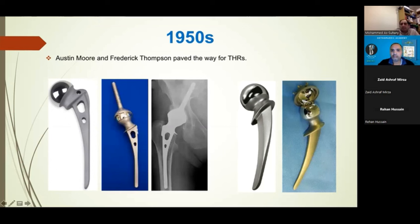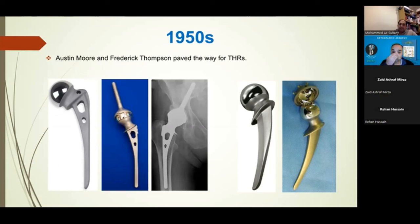Additions were made to these to create total hip replacement versions. The Thompson's cup had a spiky anchor bit that anchored into the acetabular bone, and the Austin Moore had a reverted ice-cream cone shape that screwed into the pelvis. These were attempts at achieving a total hip replacement concept, but unfortunately they failed because of a lot of friction, a lot of wear - metal on metal produced metal debris and soft tissue reaction, so things deteriorated quickly.